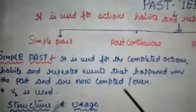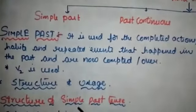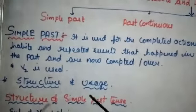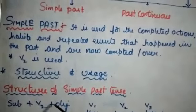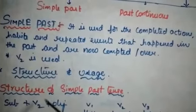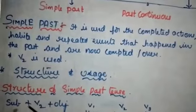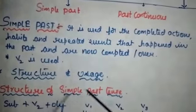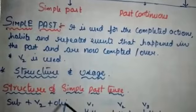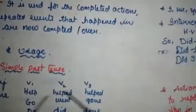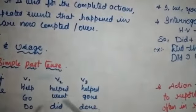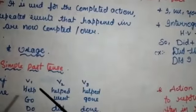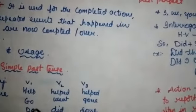Now we will see the structure first. The structure of simple past tense is: Subject + V2 + Object. V2 means verb second form. Simple present tense is Subject + V1 + Object; simple past tense is Subject + V2 + Object. Here I have given three examples of V1, V2, V3: help/helped/helped, go/went/gone, do/did/done. These are the three forms of these verbs.